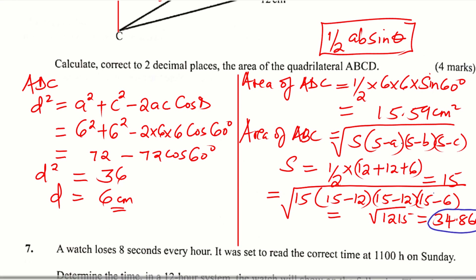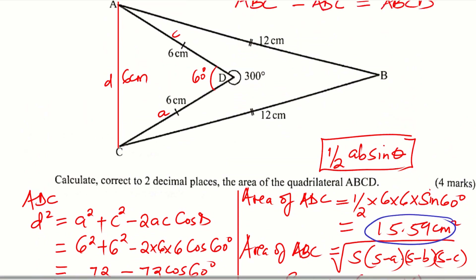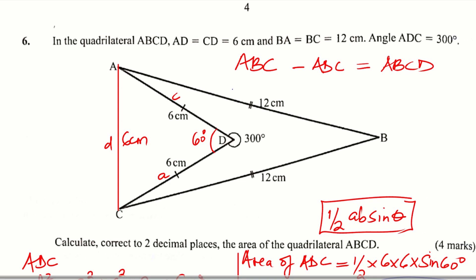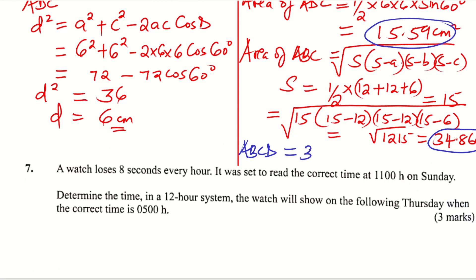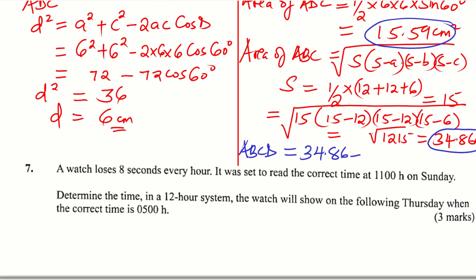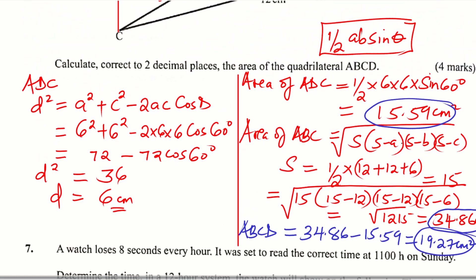Now we have the area of triangle ABC and the area of triangle ADC. The area of the quadrilateral ABCD is given by the area of the bigger triangle ABC subtract the area of the other triangle ADC. So the area of ABCD equals 34.86 minus 15.59, which gives 19.27 centimeters squared. That is how you are supposed to solve that question.